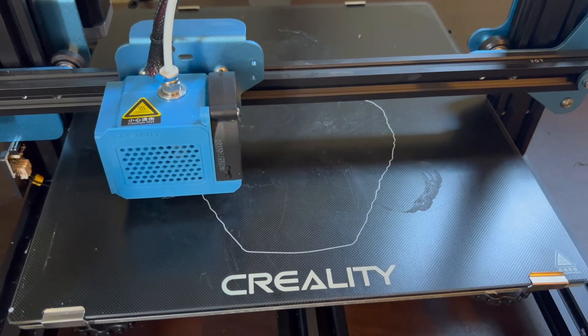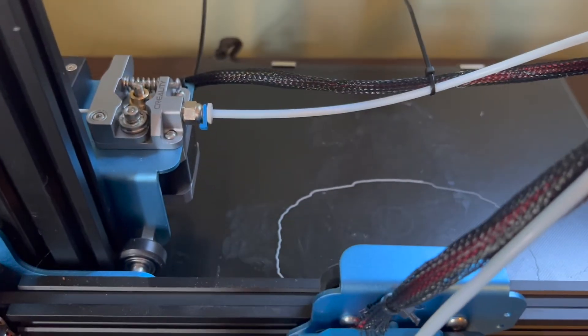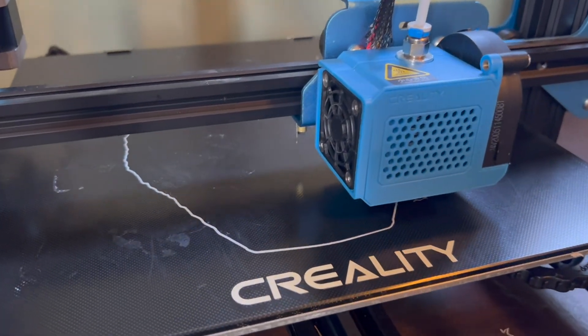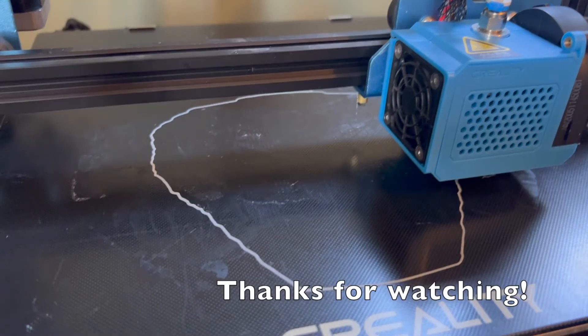And now, here you see the filament goes through as normal and the Bowden tube does not slip out of the clamp, with the new one replacing it. If you have any questions, please leave me a comment and don't forget to like and subscribe for more tutorials. Thanks, guys. I will catch you next week. Happy printing.